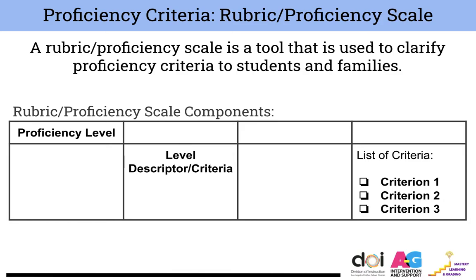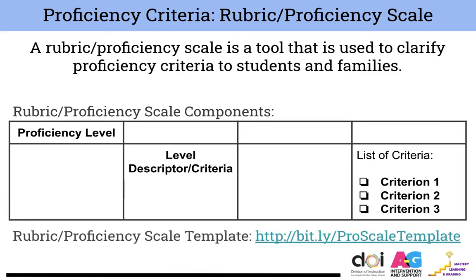It's generally composed of four separate levels, and you'll see proficiency levels either across the top or to the side of the level descriptor criteria. If there are multiple criteria within a descriptor, we tend to see them listed. If you'd like, you can always access a template for a proficiency scale by going to the bit.ly on your screen.